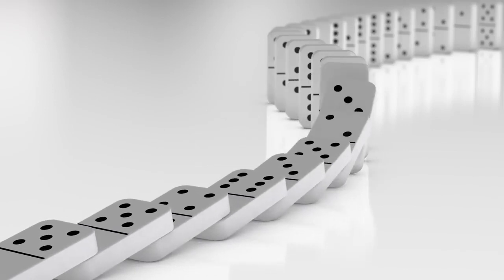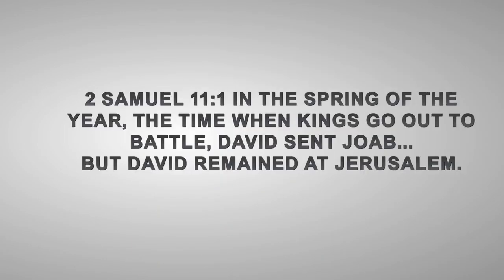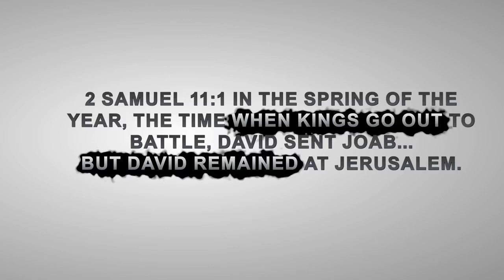In 2 Samuel 11, the inspired author specifically points out that the occasion for David's fall came about at a time when he should have been at war. The customs of that day had the kings going to war, but the text says David remained. He didn't go.